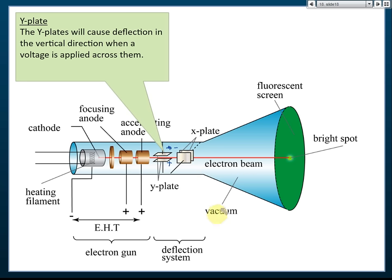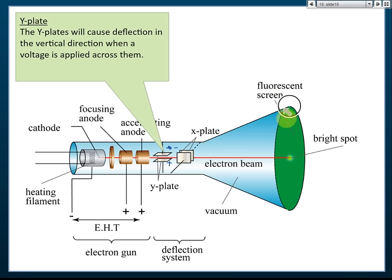The whole tube is a vacuum. The reason for this is so that electrons won't collide with any air particles inside. If electrons collide with air particles, they could be deflected up or down, preventing a clean single spot. When the electron reaches the fluorescent screen and collides with it, its kinetic energy is converted to light energy, which is absorbed by the fluorescent substance to produce a bright spot on the screen.